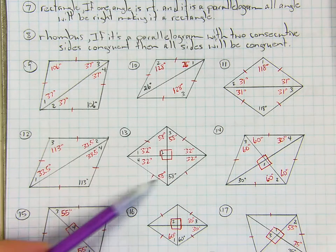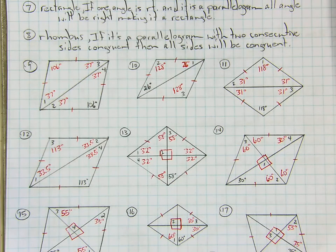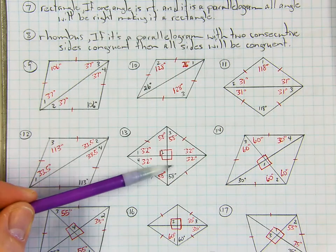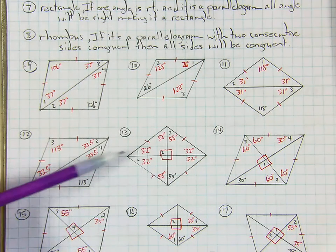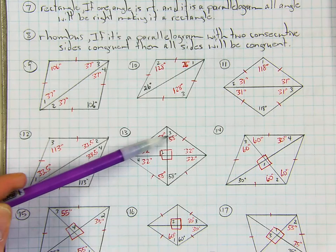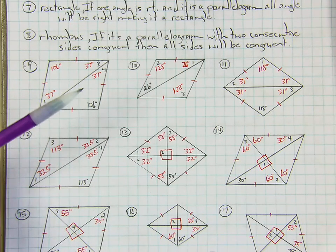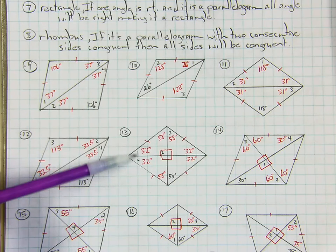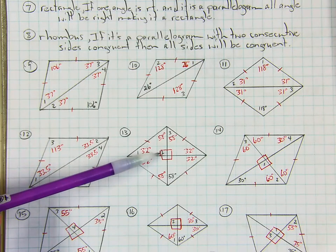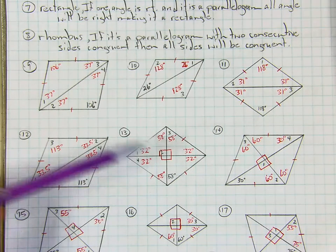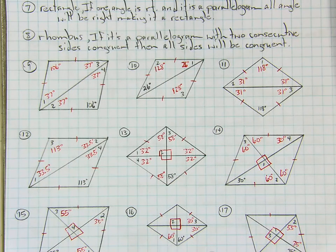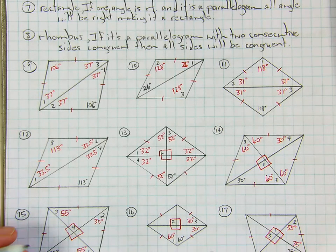On number 13, they draw both diagonals. We know the diagonals of a rhombus are perpendicular, so those are right angles in the middle. Angle 2 is a right angle. Since this angle is 58 and the diagonals bisect opposite angles, the one next to it is also 58, so angle 3 is 58. Then 90 and 58 from 180 gives 32, so angle 4 is 32. You can find every angle in that picture.